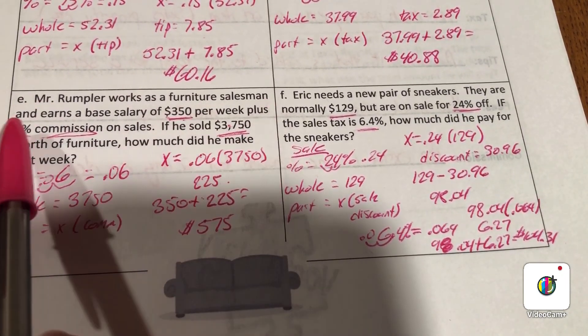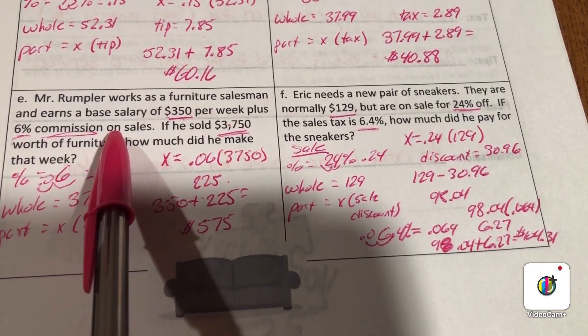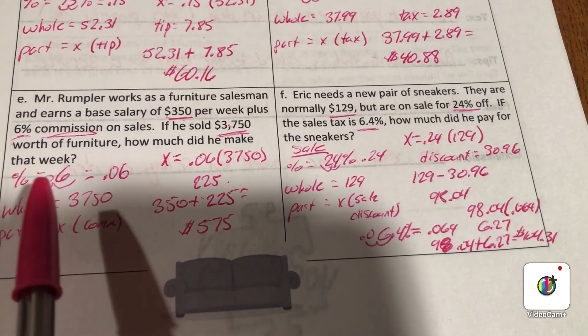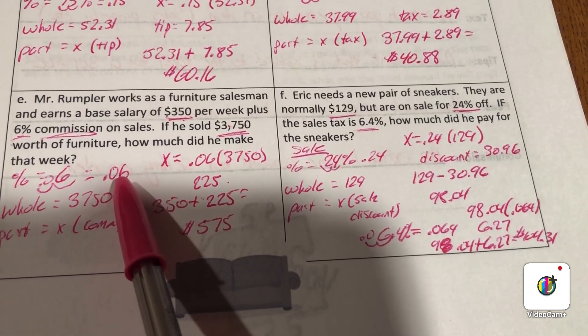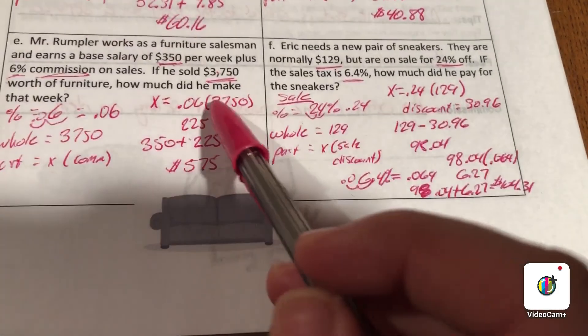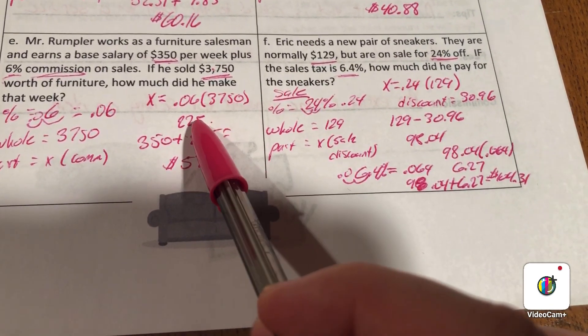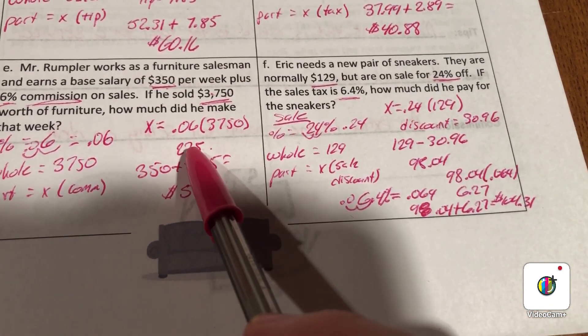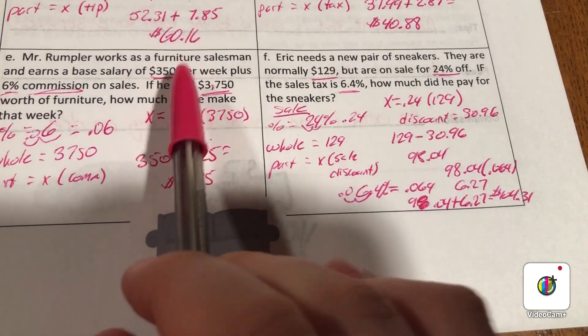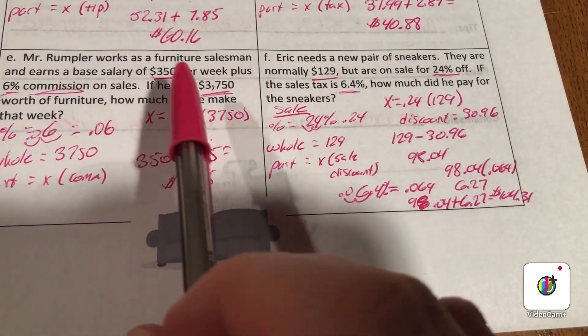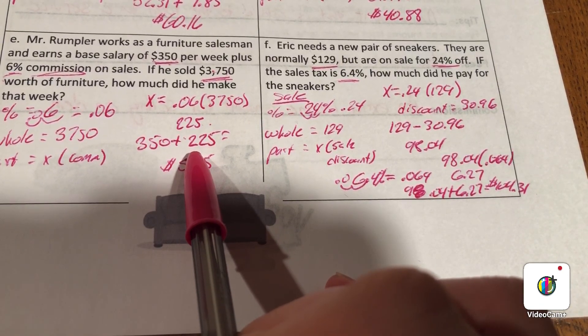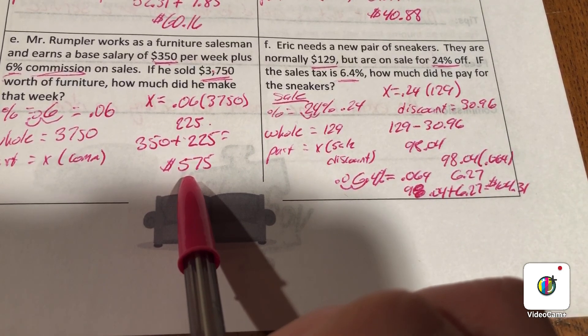Mr. Rumpler works as a furniture salesman and earns a base salary of $350 per week plus 6% commission on sales. If he sold $3,750 worth of furniture, how much did he make that week? The percent on his sales is 0.06, and his sales were $3,750. That's how we figure out the commission. So it's 0.06 times $3,750, so he made in addition to his $350 an extra $225. He makes $350 per week no matter how much he sells. If he sells zero dollars he will still get $350. If he sells $20,000 worth of furniture, he'll get $350 plus his commission. So for this week, his $350 base salary plus his commission of $225 will give him $575. That's how much he'll make that week.